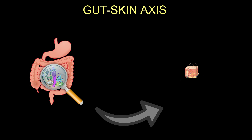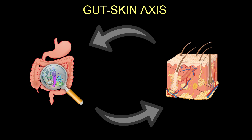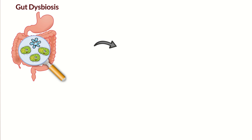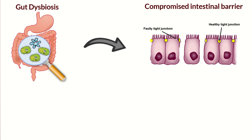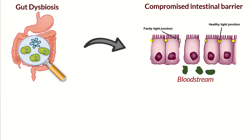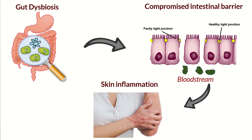Research has now shown that we have something called the gut-skin axis, which is a bi-directional relationship between our gut microbiome and our skin health. A dysbiosis or an imbalance in the gut results in a compromised intestinal barrier. Because of this compromised intestinal barrier, there occurs a leakage of bacterial toxins into the bloodstream, which results in an inflammatory immune response in the body that ultimately shows up as skin irritation or rashes.